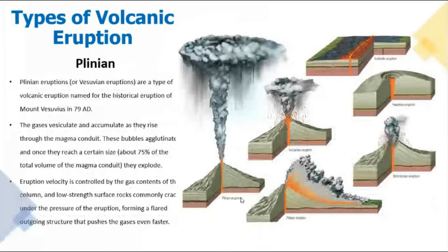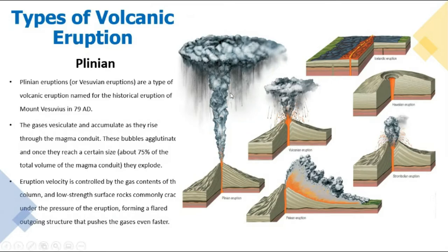The last type is Vesuvian — also called the Plinian type — named after Mount Vesuvius in 79 AD. Gases vesiculate and accumulate as they rise through the magma conduit. These bubbles coalesce, and once they reach the central pipe, 75 percent of the magma volume explodes.